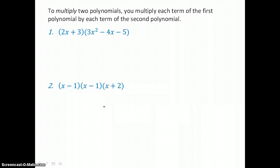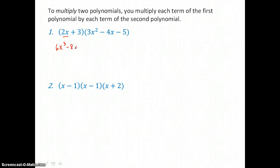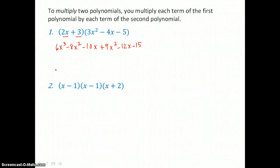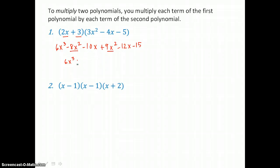To multiply two polynomials, you multiply each term of the first polynomial by each term of the second polynomial. We're distributing — first distributing 2x through that trinomial. 2x times 3x squared is 6x cubed. 2x times negative 4x is negative 8x squared. And 2x times negative 5 is negative 10x. Then we start over with 3: 3 times 3x squared is 9x squared. 3 times negative 4x is negative 12x. And 3 times negative 5 is negative 15. Now adding like terms: we have 6x cubed, negative 8x squared plus 9x squared is positive 1x squared, negative 10x plus negative 12x is negative 22x, and our constant is negative 15. So this product is a cubic.